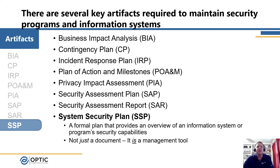Finally, we have the System Security Plan, or SSP. A system security plan is a formal document that defines how security controls are implemented within a system. It lists each of the security controls assigned to the system and how they have been implemented, are planned to be implemented, or are inherited. For example, if you're using a cloud service provider, you may inherit the physical security of their data center, and that would be defined in the SSP.